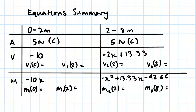For the shear, we have minus 10 for the first span. The shear at 0 is minus 10 and the shear at 2 is also minus 10 because this is not a function of x — it's a constant, so it's going to be a straight line.